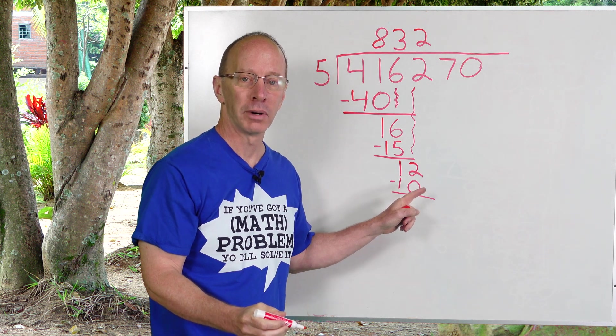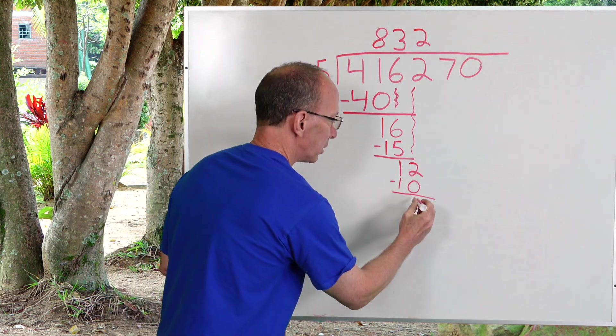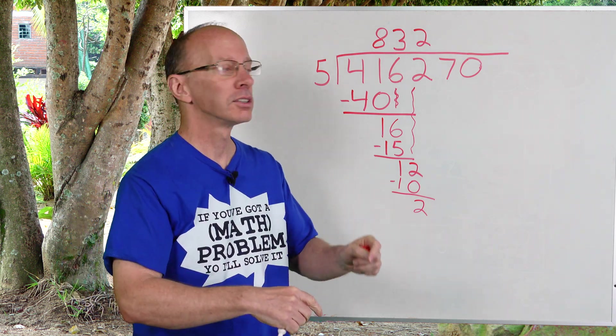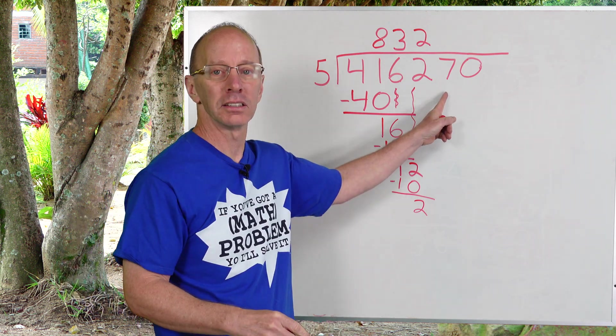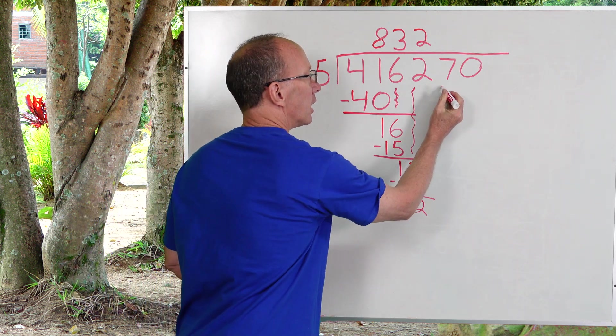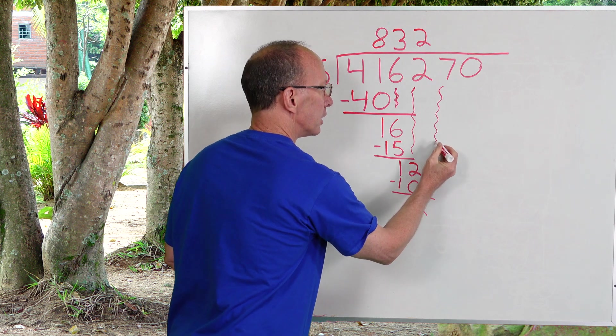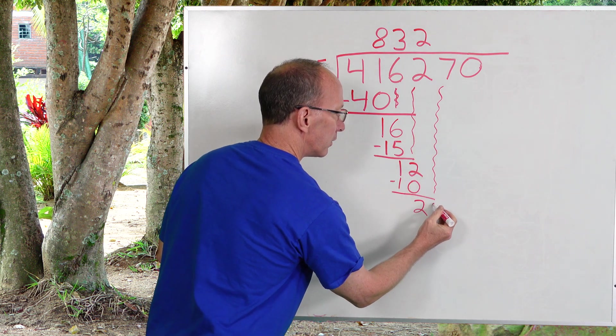Subtract. Two minus zero, two. Put the two right there. Start the whole process over again. Bring that next number down, down all the way over here. 27.